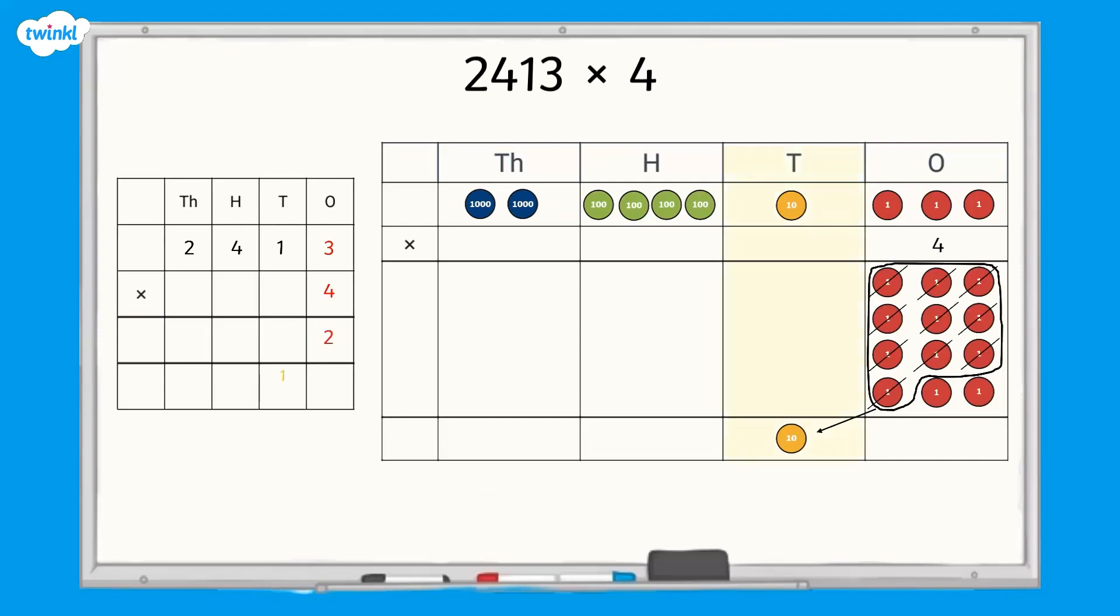Now let's multiply the tens. One ten multiplied by four equals four tens. With the regrouped ten, we have five tens altogether.